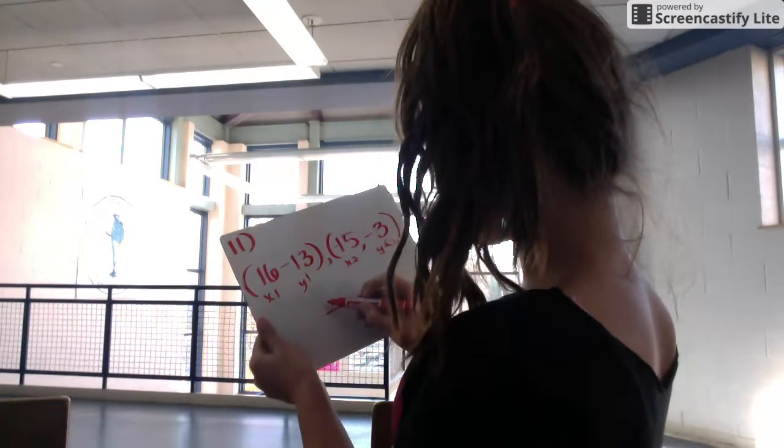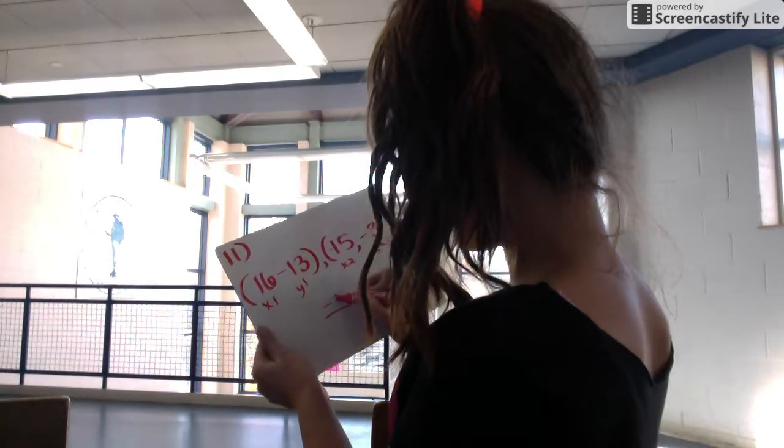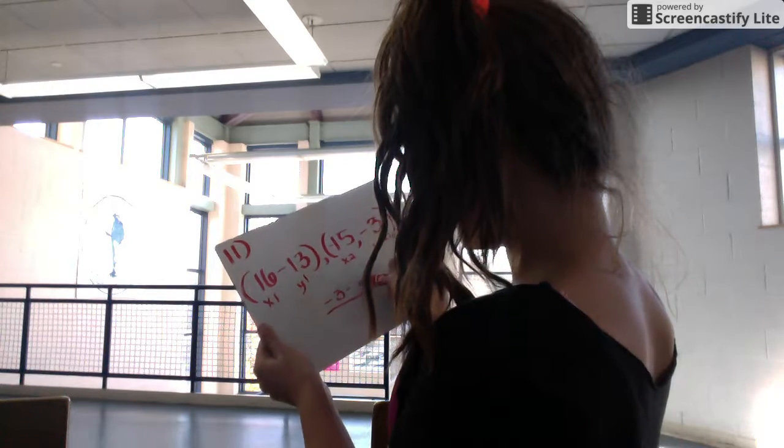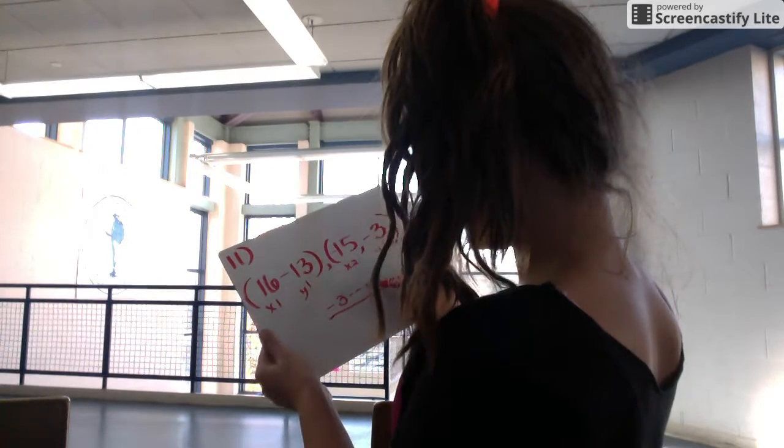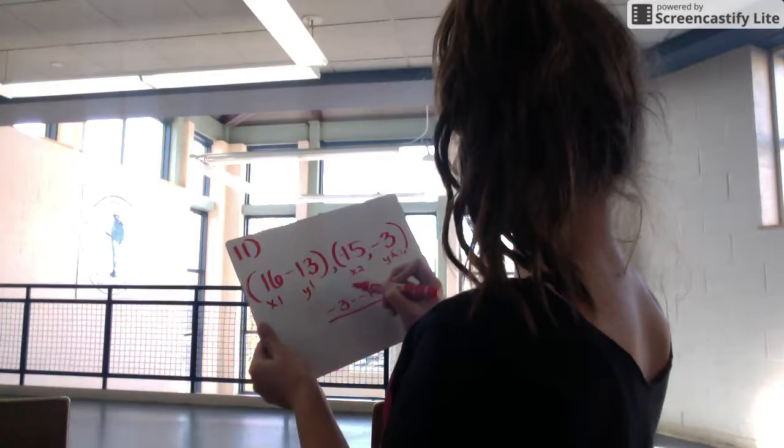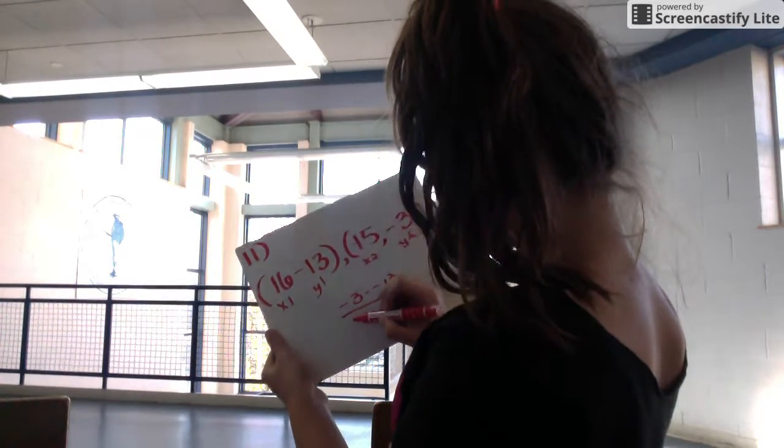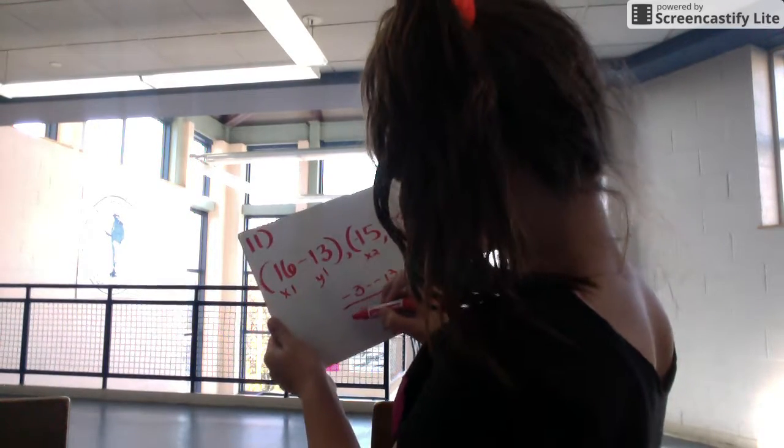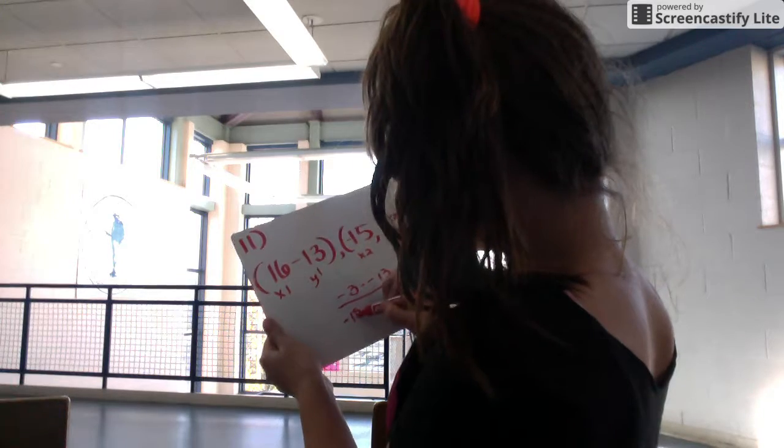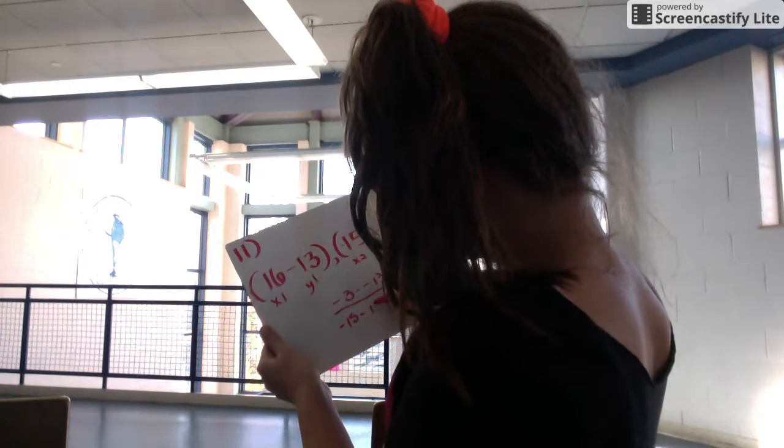So it's going to be negative 3 minus negative 13. And then on the bottom it's going to be the x's and the 2's go first. So it's going to be negative 15 minus 16.